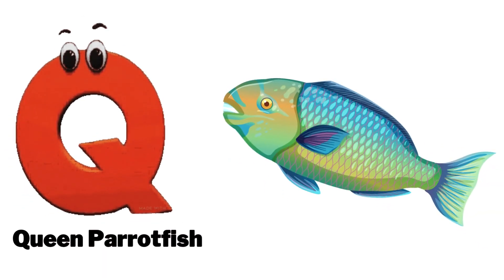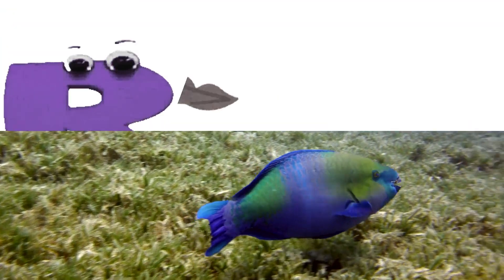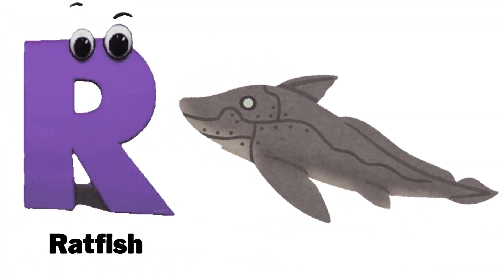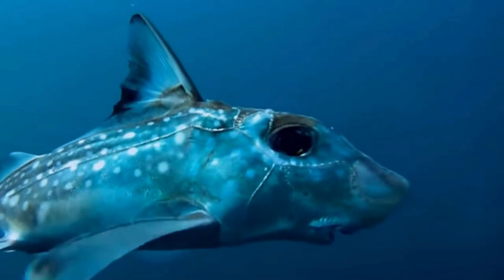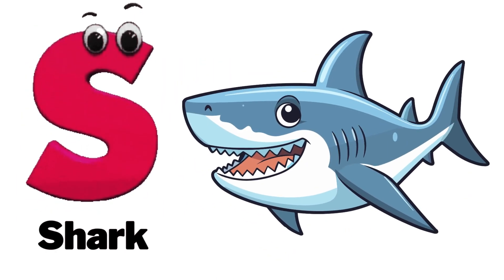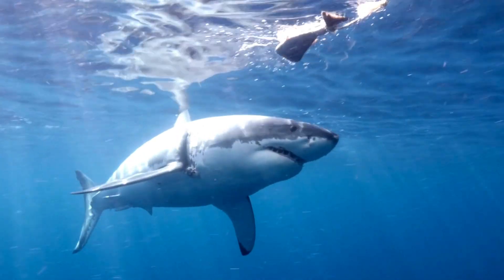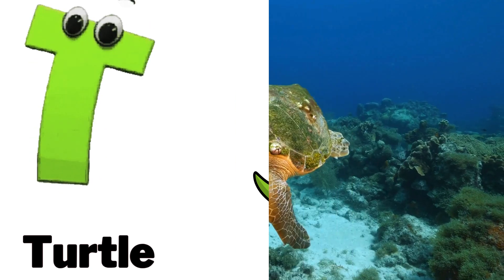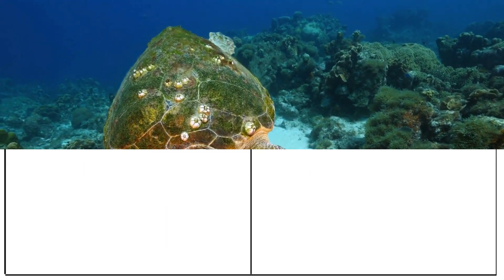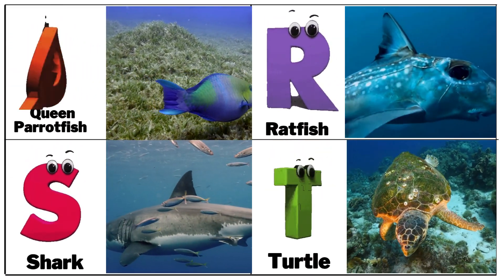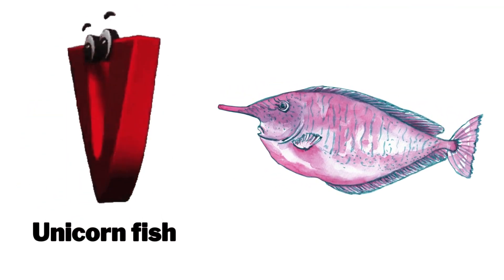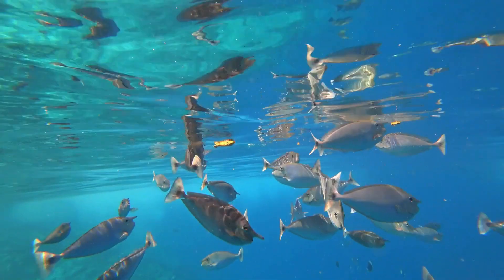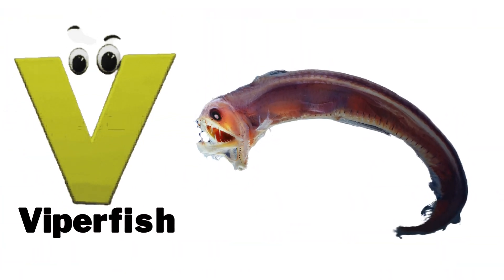Q is for queen parrotfish. R is for ratfish. S is for starfish. T is for turtle. U is for unicorn fish. V is for blackfish.